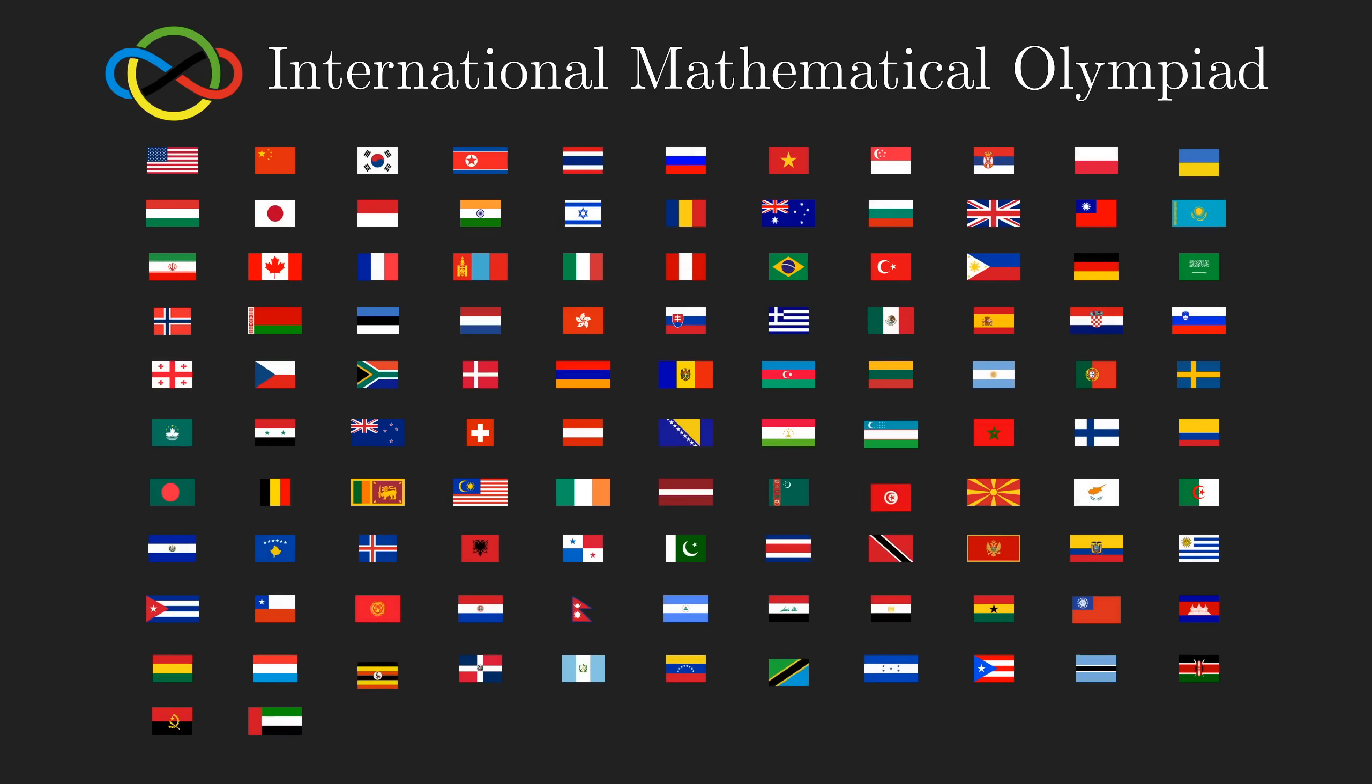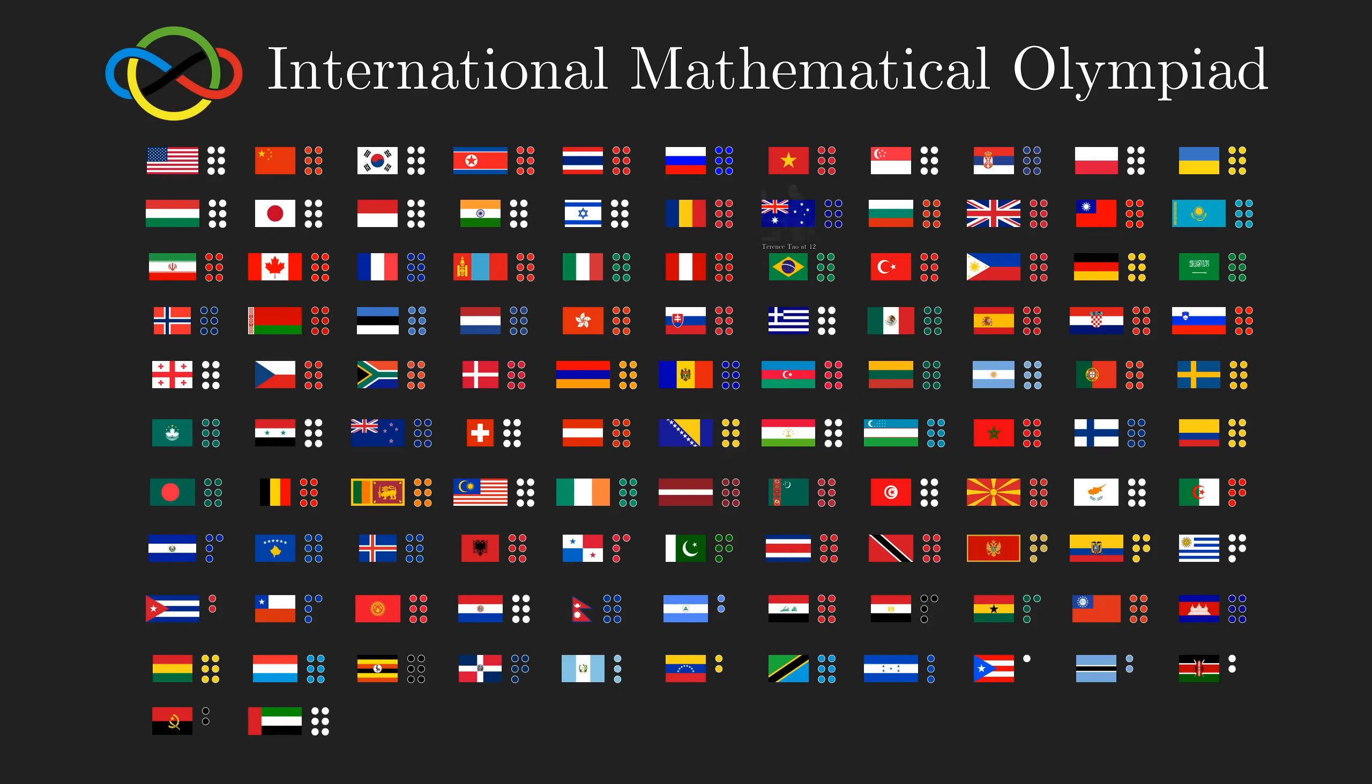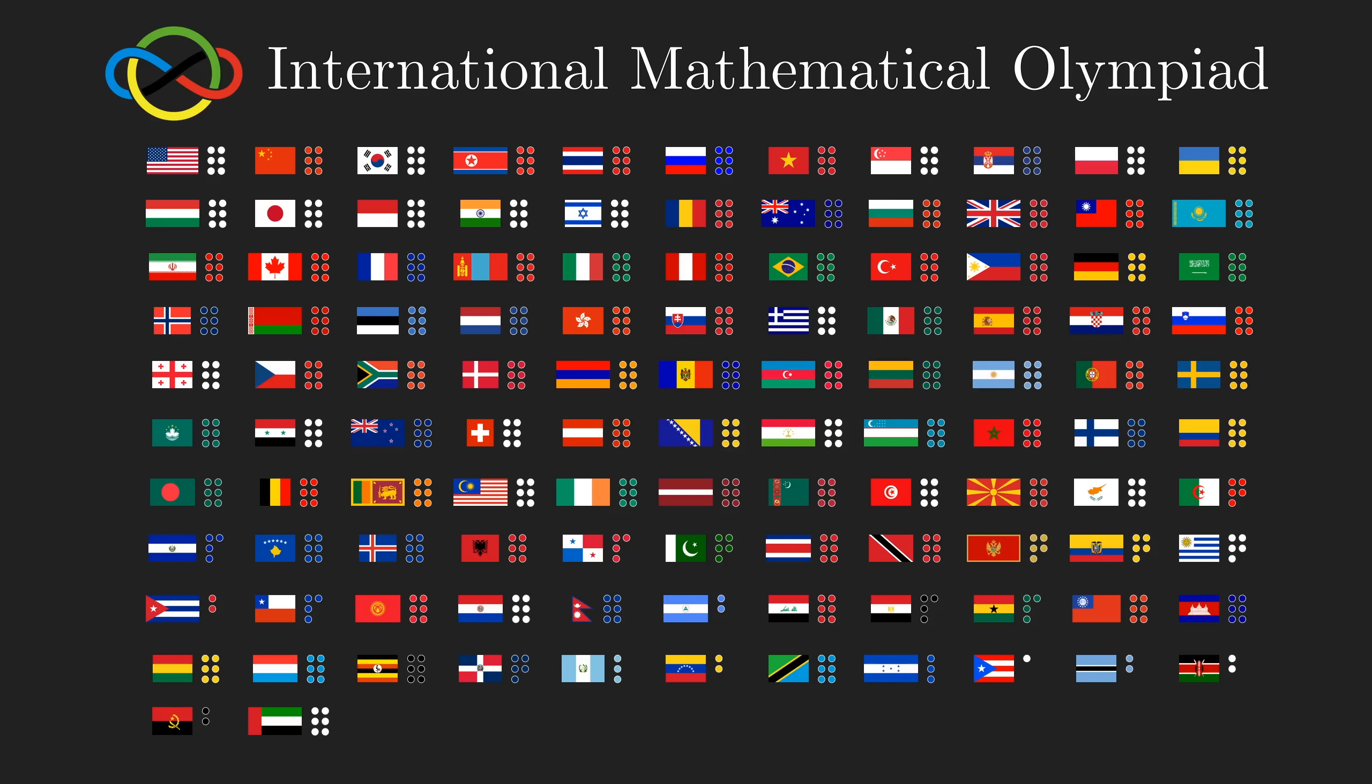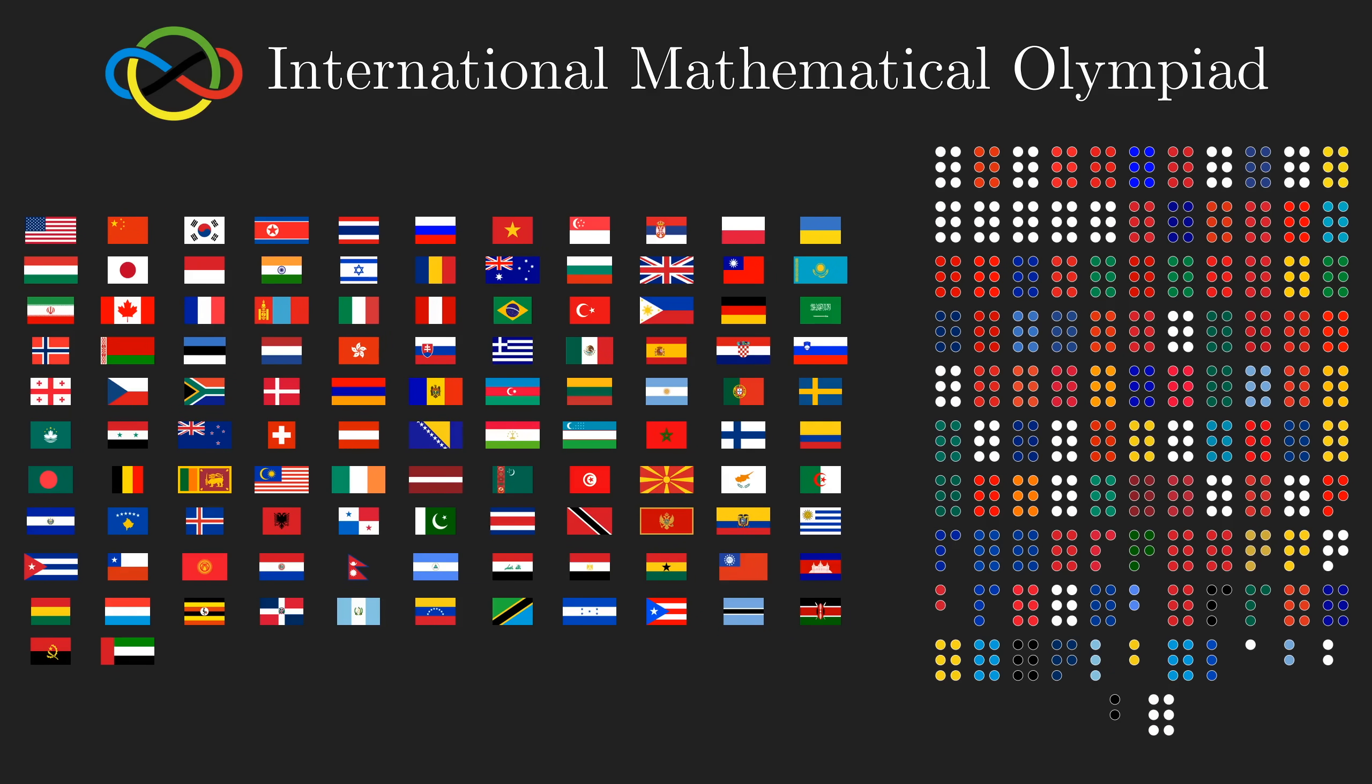Every year, more than 100 countries send six of their brightest teenagers, or the occasional prepubescent prodigy, to represent them at the International Math Olympiad, commonly known as the IMO.